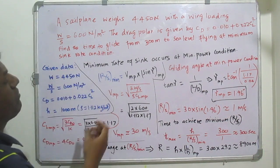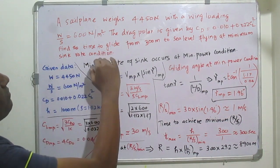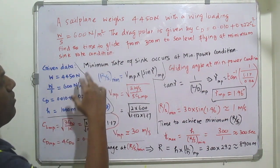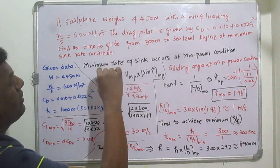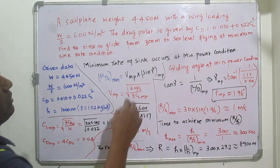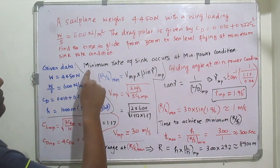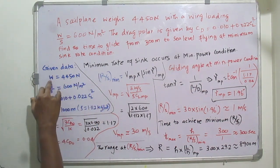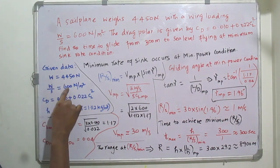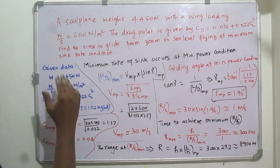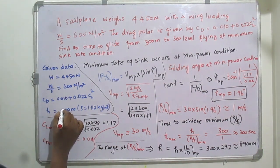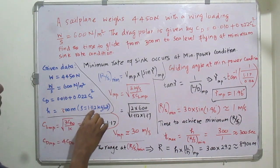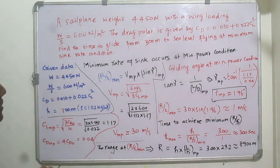We need to find the time taken for gliding and also the range, both at minimum rate of sink conditions. The given data: weight W = 4415 N, wing loading = 600 N/m², drag polar CD = 0.010 + 0.022·CL², height = 300 m, and the air density at 300 m is 1.112 kg/m³.